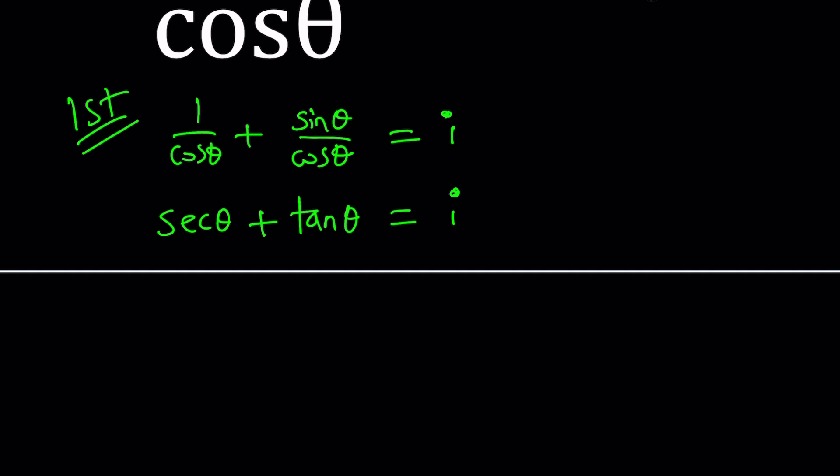Well, secant and tangent are very closely related, and if you've done a little bit of trigonometry or calculus, you would know this. If you've done some limits or identities, you always use these identities. So how are secant and tangent related? To understand it better, we're going to square both sides. Squaring both sides gives us tan²θ and sec²θ, which is good because sec²θ = 1 + tan²θ.